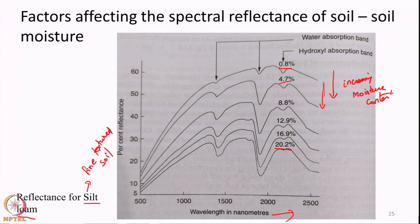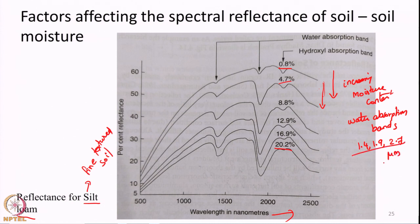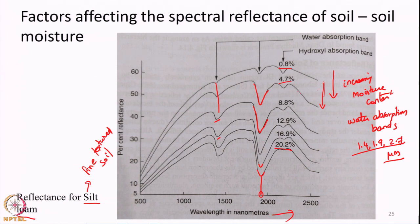In addition to this, we have come across characteristic water absorption bands. Either in vegetation or in atmosphere, we have discussed that 1.4, 1.9 and 2.7 micrometers are essentially water absorption bands. As the moisture content in the soil increases, at these particular wavelengths the reflectance will go down sharply. This is most clearly seen in the 1.9 micrometer range — around this range, as the moisture content increases, the absorption feature becomes very deep.